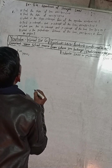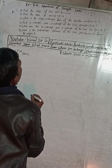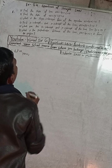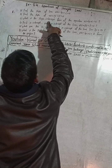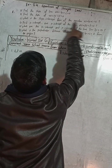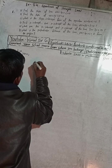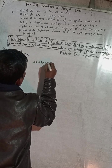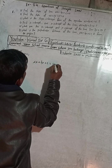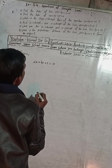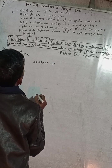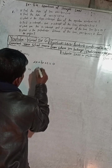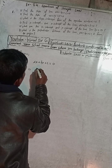Part (c): find the slope-intercept form of the equation ax + by + c = 0. I write ax + by + c = 0, and I will isolate by on the same side.